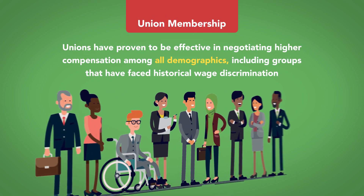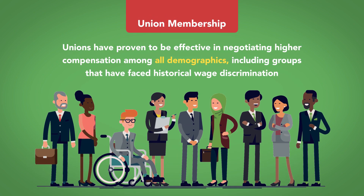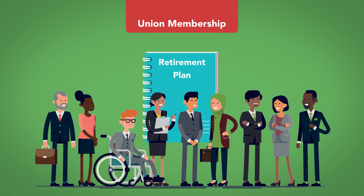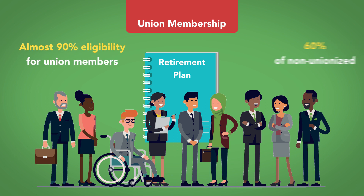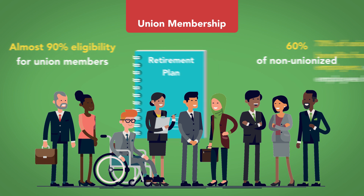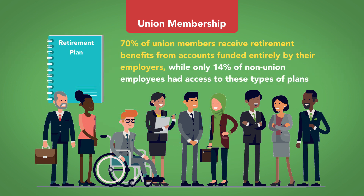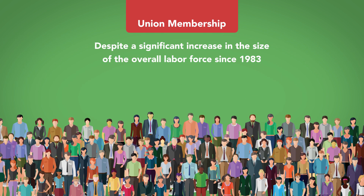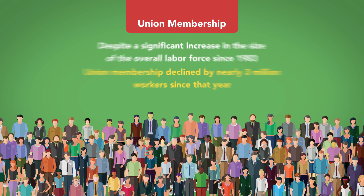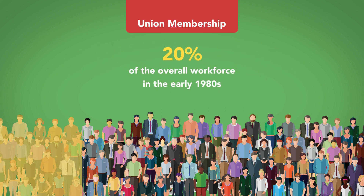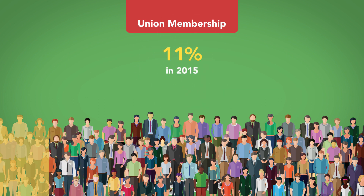Union Membership. Unions have proven to be effective in negotiating higher compensation among all demographics, including groups that have faced historical wage discrimination. Union members also have far higher rates of enrollment in employer-funded retirement plans than private employees — almost 90% eligibility for union members, compared with only about 60% of non-unionized workers. Furthermore, 70% of union members receive retirement benefits from accounts funded entirely by their employers, while only about 14% of non-union employees had access to these types of plans. Despite a significant increase in the size of the overall labor force since 1983, union membership declined by nearly 3 million workers since that year. Union membership has plummeted from over 20% of the overall workforce in the early 1980s to a mere 11% in 2015.